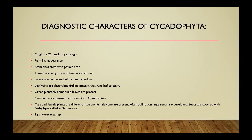Cycadophyta originated approximately 250 million years ago and has a palm-like appearance. They have a branchless stem system with leaf scars, and their tissues are very soft because they lack true wood. Leaves are connected to the stem by a petiole, and leaf veins are completely absent but girdles are present running from leaf to stem. Green pinnately compound leaves and coralloid roots are also present, with symbiotic cyanobacteria in their root system.